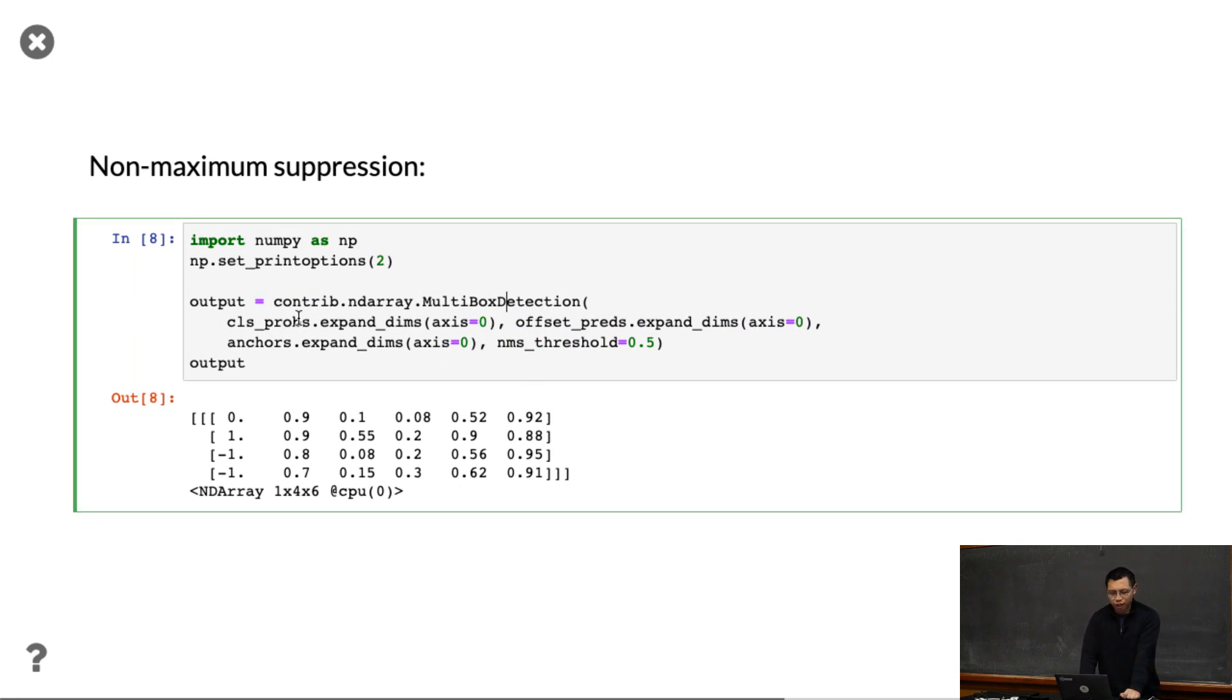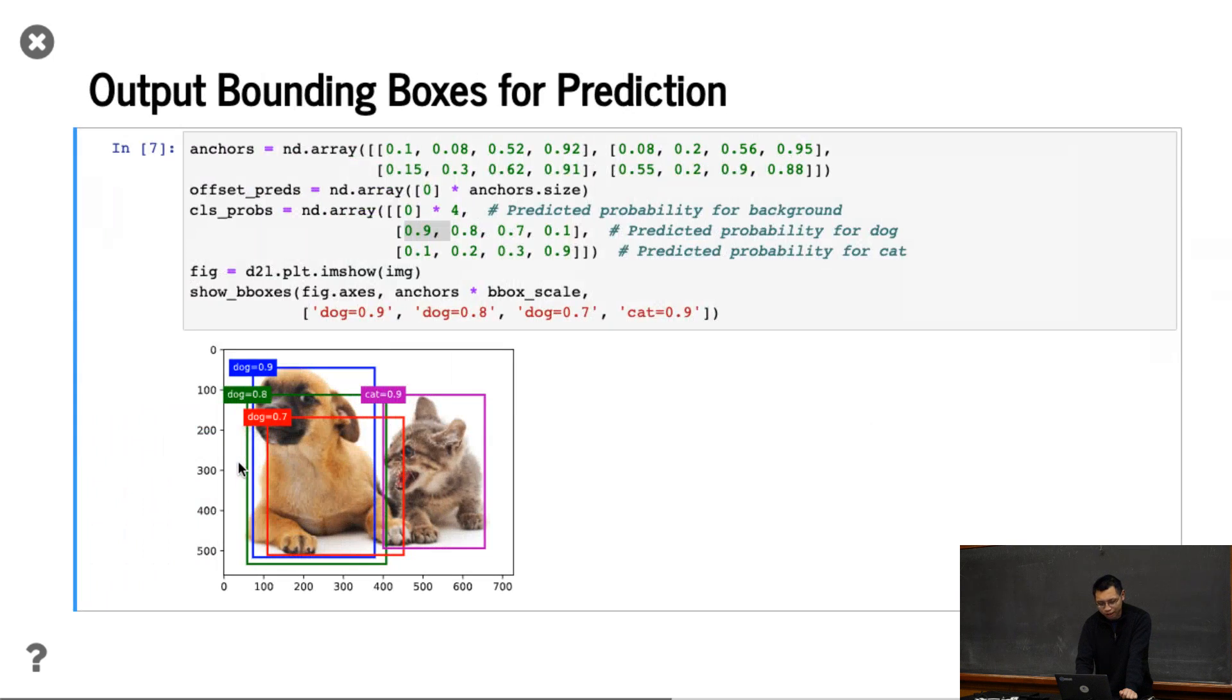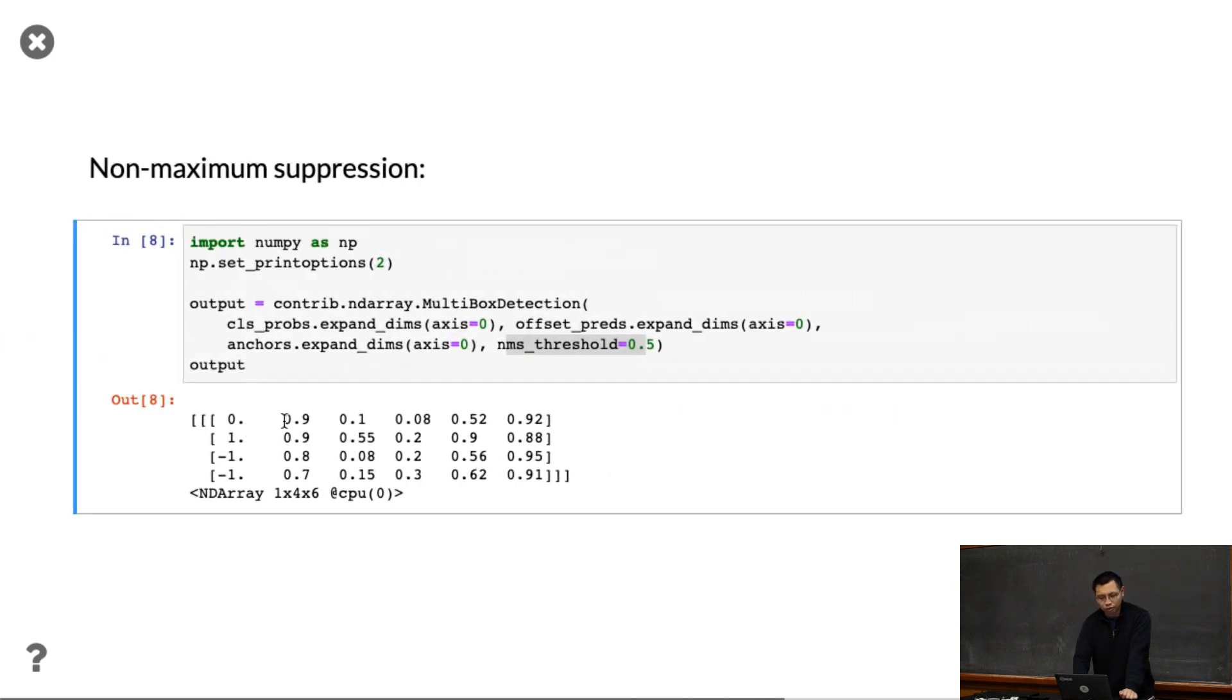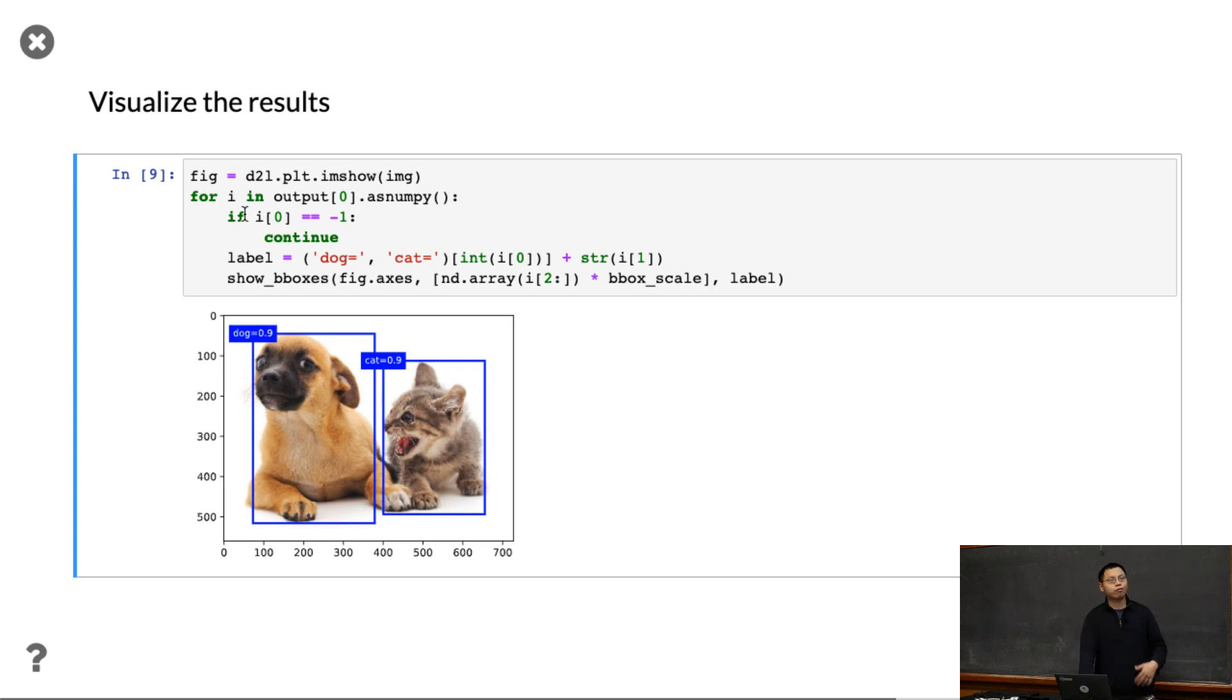So what do we do here? We're using multibox_detection given the class probability, given the offset, given the anchors. Here's the NMS thresholding. We choose 0.5 here. If two bounding boxes, the overlapping is less than 0.5, we are most likely to just remove them. You can see that the output will be zero means it's actually half the class, one means it's the class, minus one means we just removed. So you can see that the cat, the dog we have, the cat we have, but the other dogs we just removed. To visualize it, we iterate all the results. If we equal minus one we just skip, otherwise we just print. And you can see that we print the result and remove all the duplications.